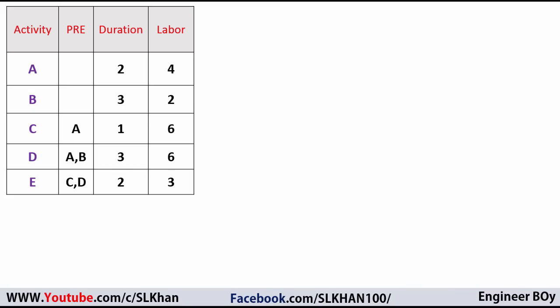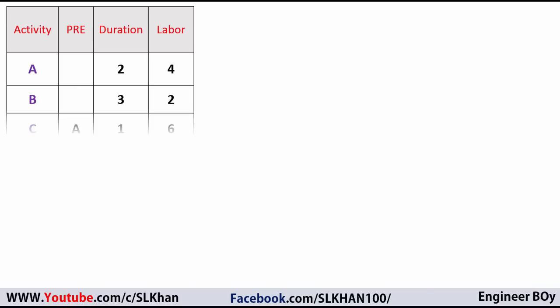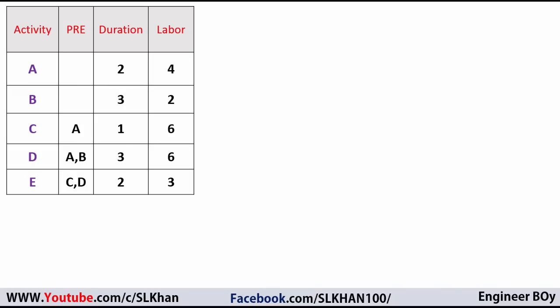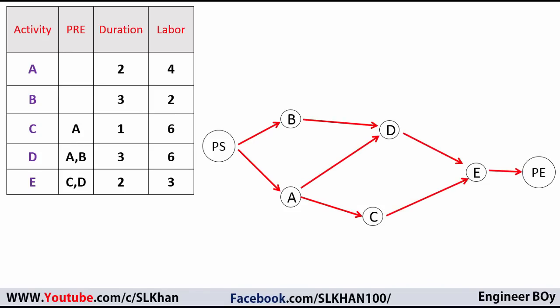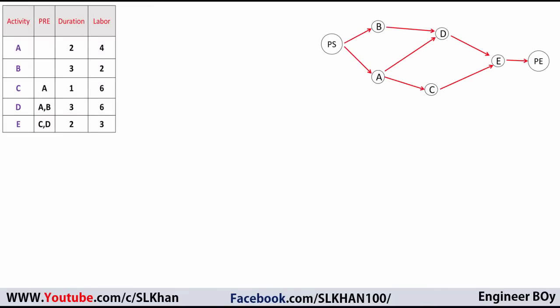This is the same table we just entered in Excel. We have activities, predecessors, durations, and labors. We're going to draw the network diagram from this. Activity A and B start from the project start. Activity C starts after A, activity D follows both A and B, and activity E follows C and D, leading to the project end. If you need to learn how to draw a network diagram, I've uploaded a separate video — the link is in the description below.